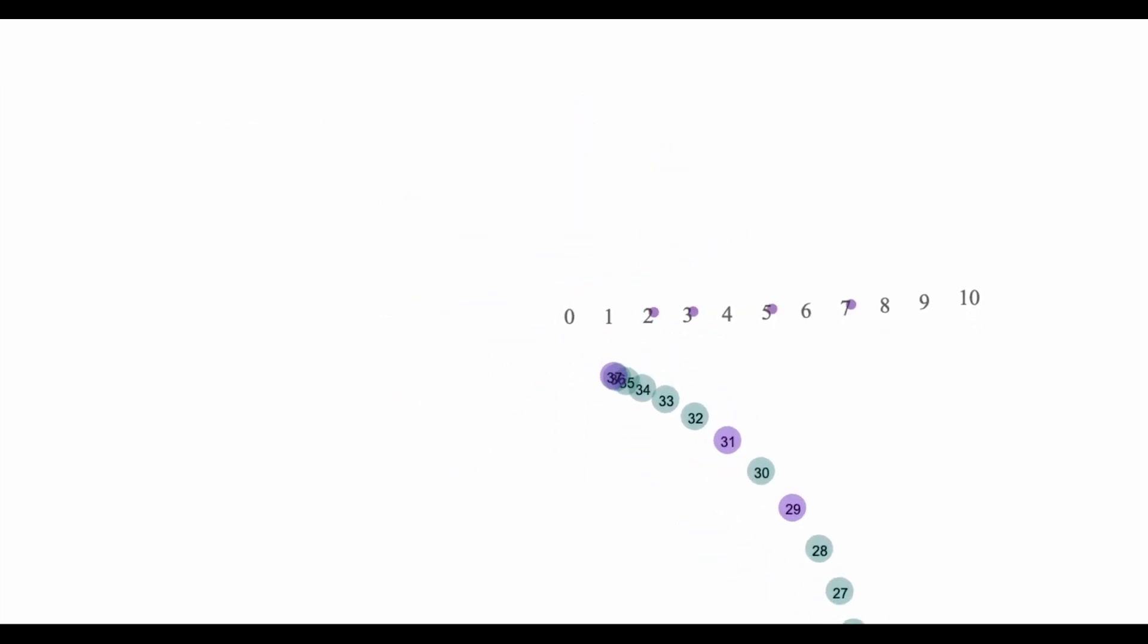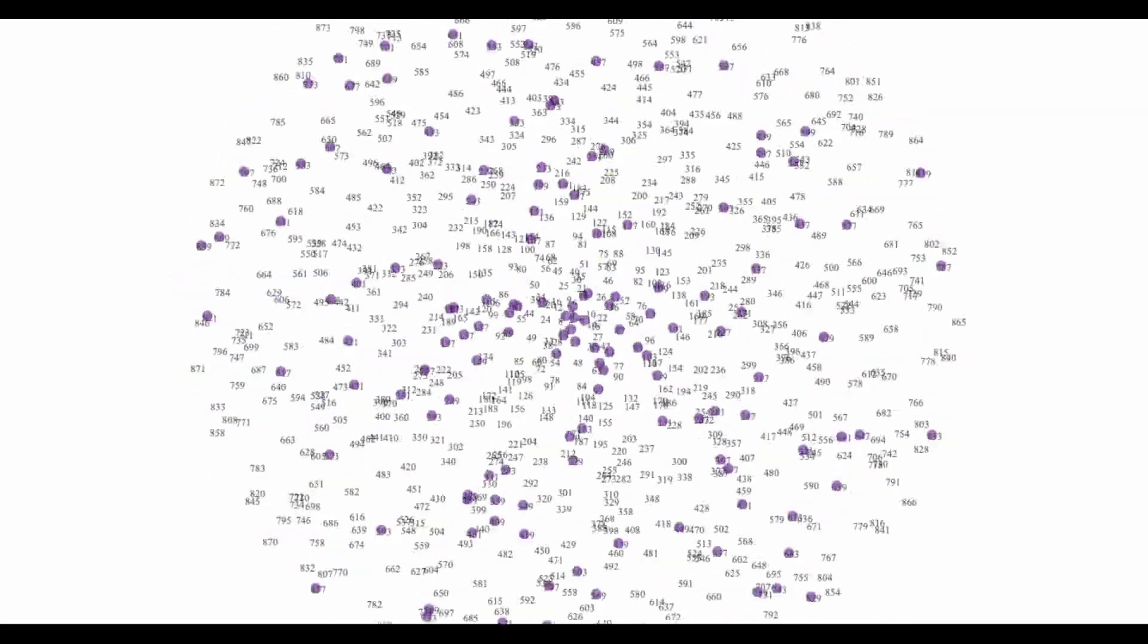It's fun to see the patterns of prime numbers as the number line is wrapped around an Archimedean spiral and coiled more tightly.